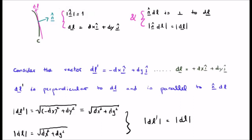But if DL is going this direction here and N hat is going this direction here, then N hat DL must be perpendicular to DL.